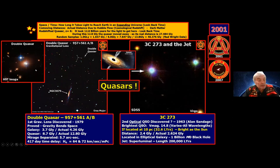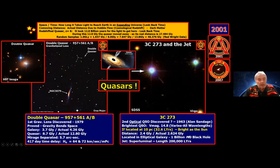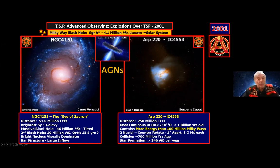This backed up Einstein's theory of general relativity — that gravity bends light. There's also a time delay between the two images, which we use to determine how fast our part of the universe is expanding. One image gives a Hubble constant of 64 and the other 72, and I've rounded all my distances to 70 kilometers per second per megaparsec.